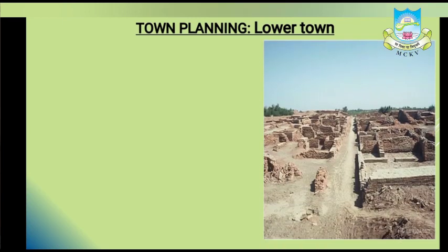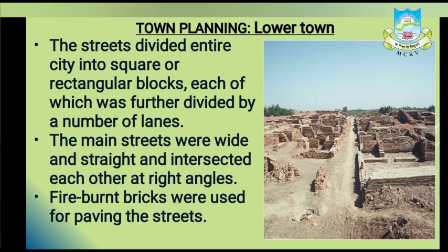The lower town of the Harappan cities was used by common people as their dwelling place. The main streets were wide and straight — in some places more than 9 meters wide — and they cut each other at right angles. Fire-burnt bricks were used for paving the streets. The houses were of different sizes; some were big, some were not, indicating a social difference within the Harappan civilization.